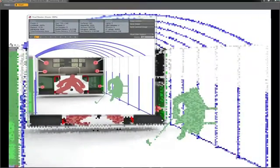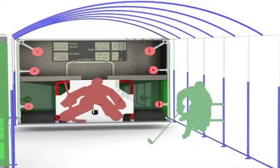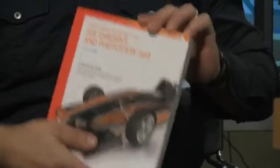This functionality works just like a point and click camera. It's super easy to use. For extra tips you might want to check out this book, Rendering using SOLIDWORKS and PhotoView 360.